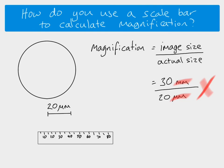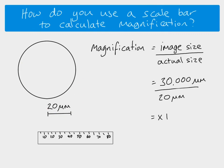However, we cannot just do 30 divided by 20 because we have different units — we must use the same units on both sides. So we convert 30 millimetres into micrometers: one millimetre is 1,000 micrometers, so 30 millimetres equals 30,000 micrometers. Now both sizes are in the same units. Dividing gives us 1,500, so the magnification of this image is ×1500. Remember, we worked this out by measuring the scale bar only — we did not measure anything on the cell.